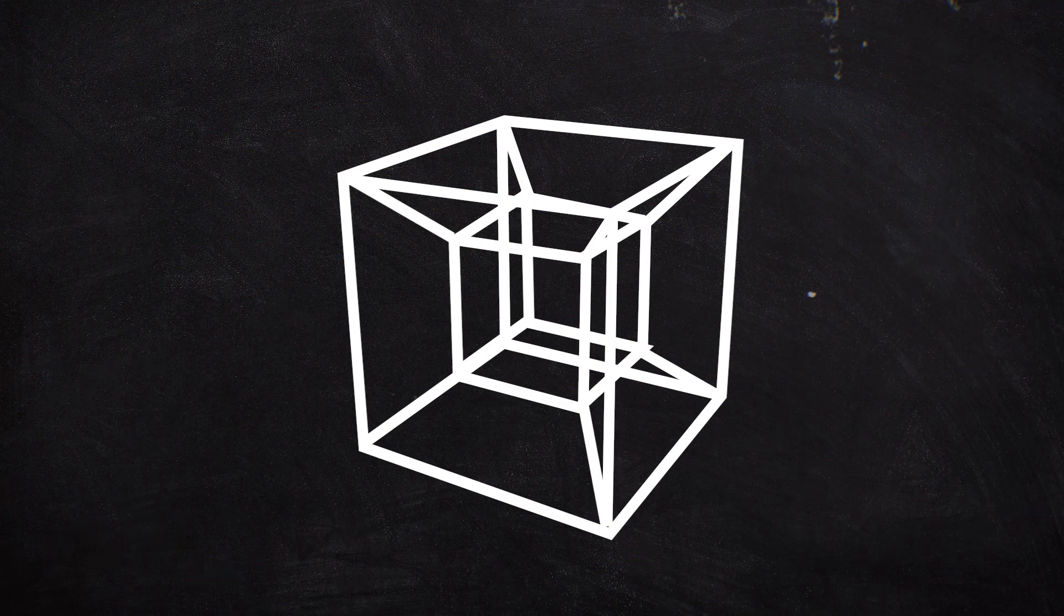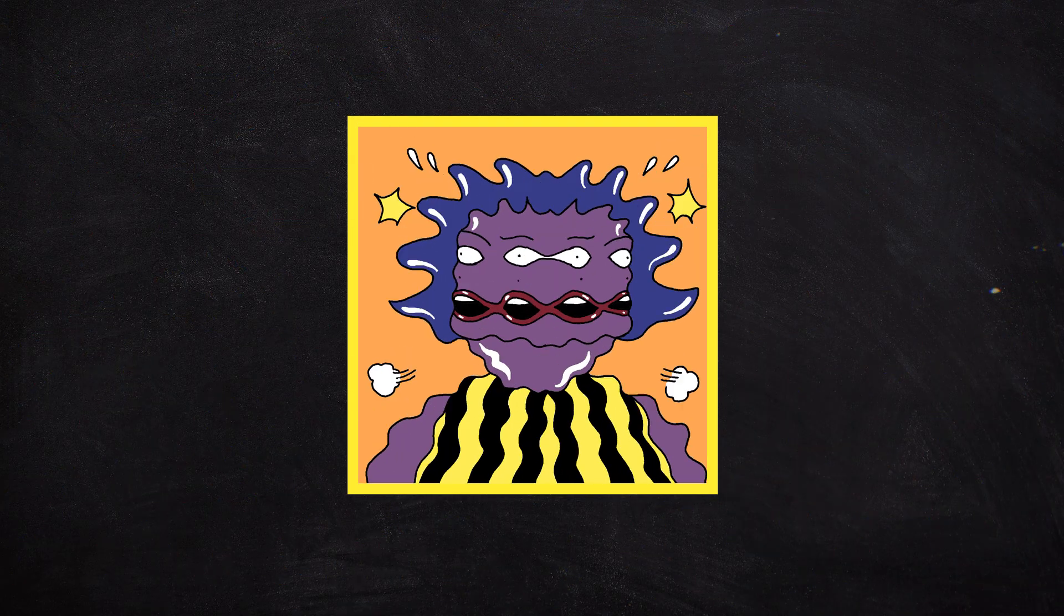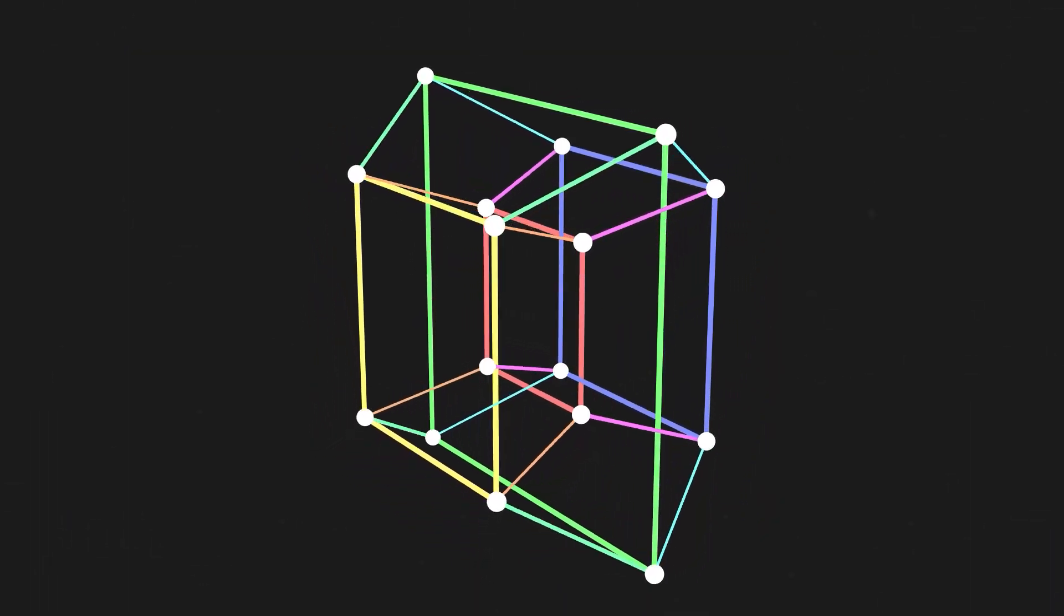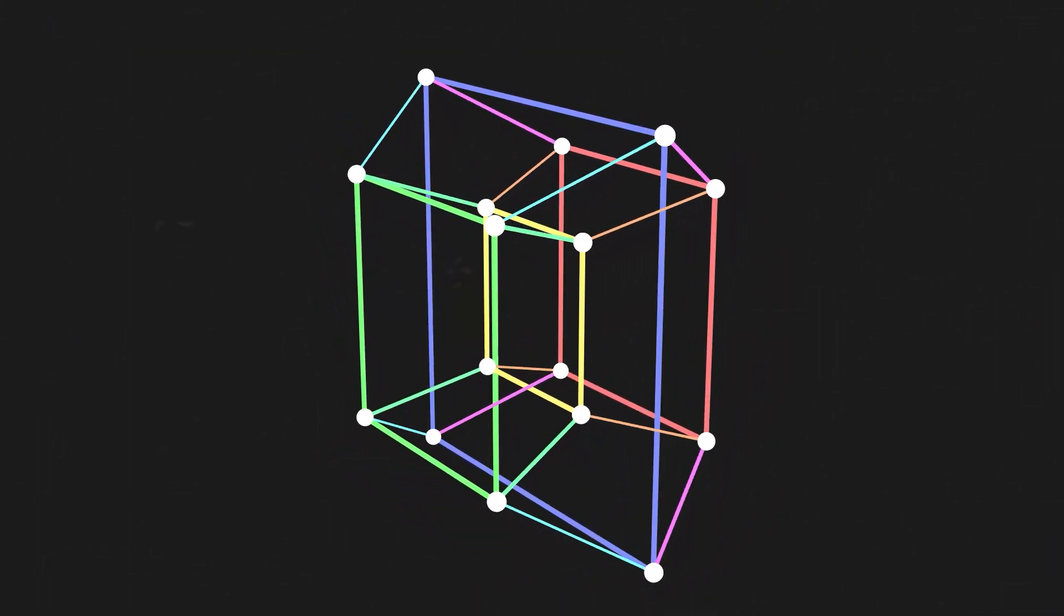Our brain cannot comprehend this object the same way a 2D species would not be able to perceive a 3D object. The tesseract is the four-dimensional analog of the cube. It's basically a cube within a cube.